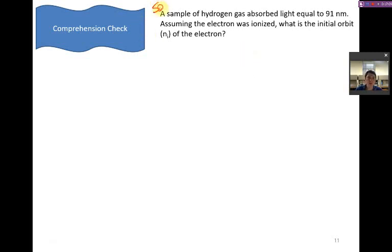Welcome back. Let's work through the solution on this. So we have hydrogen gas, and it's absorbing light equal to 91 nanometers. Assuming it was ionized, what was the initial orbit or the initial energy level of the electron? So by using the Rydberg equation, we can solve for the initial and the final states. We know that the energy change of our transition states is going to be equal to the energy of the light that was in this case absorbed.